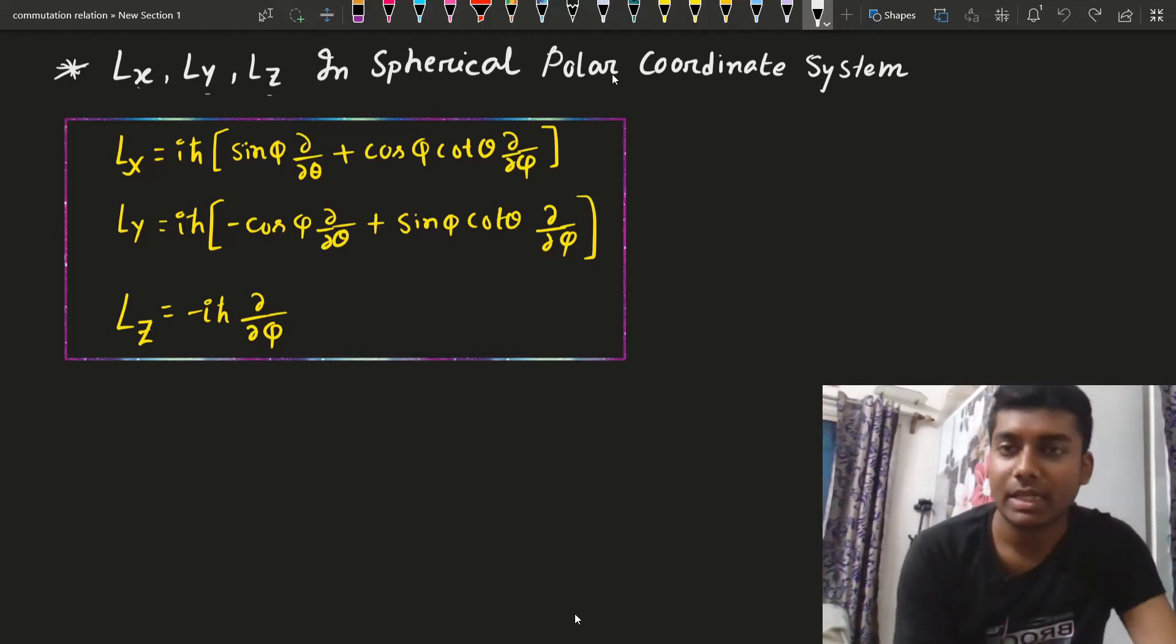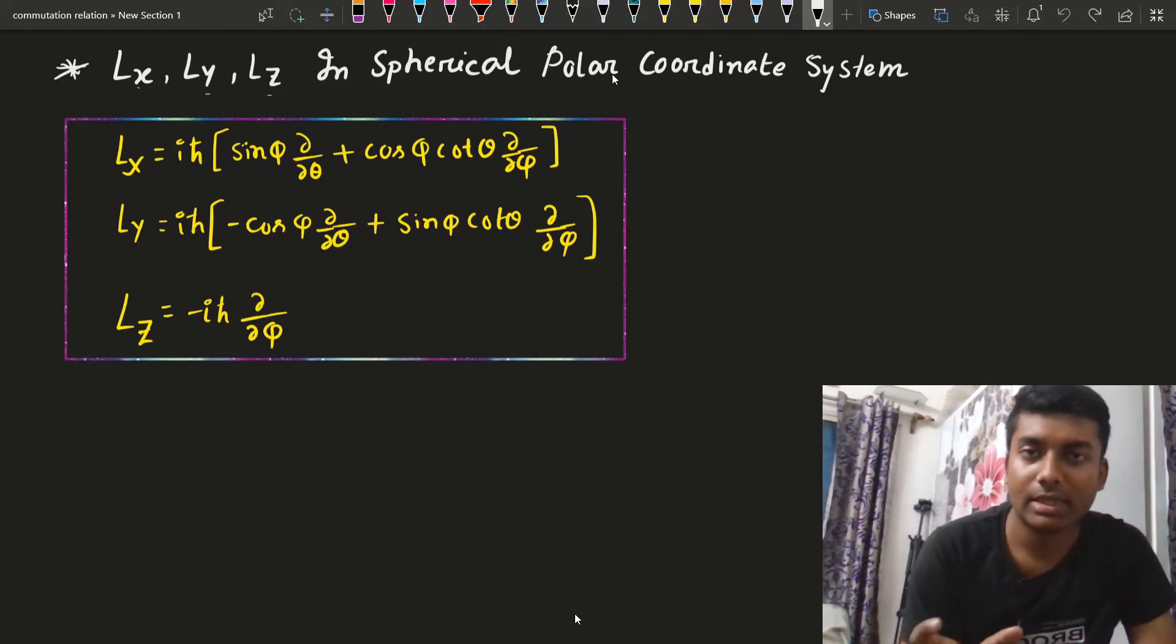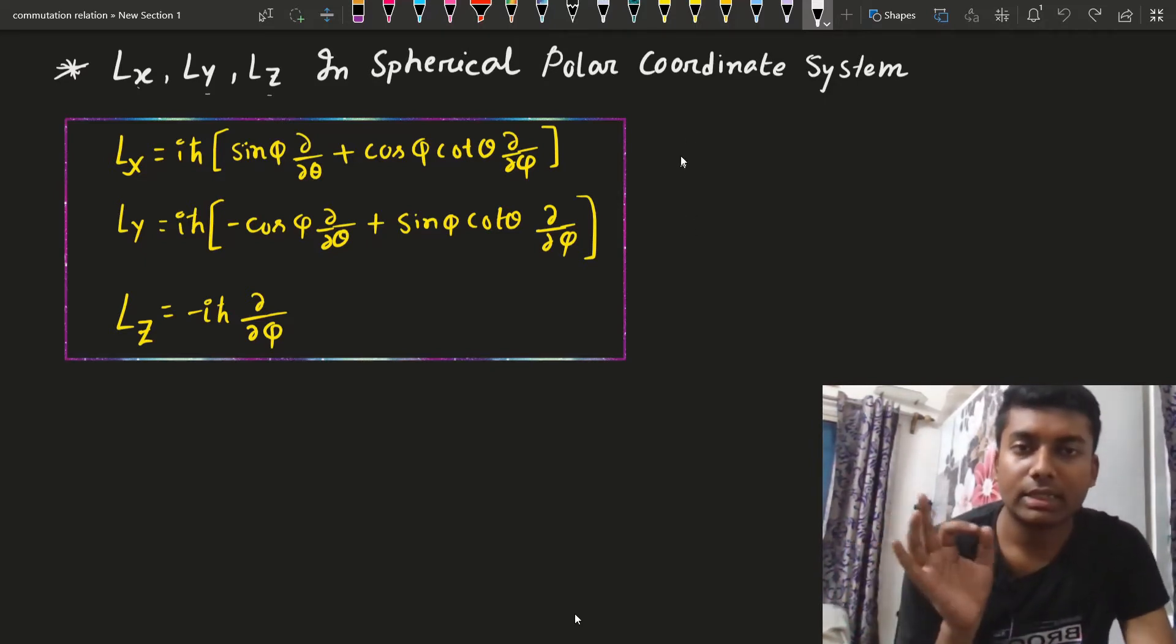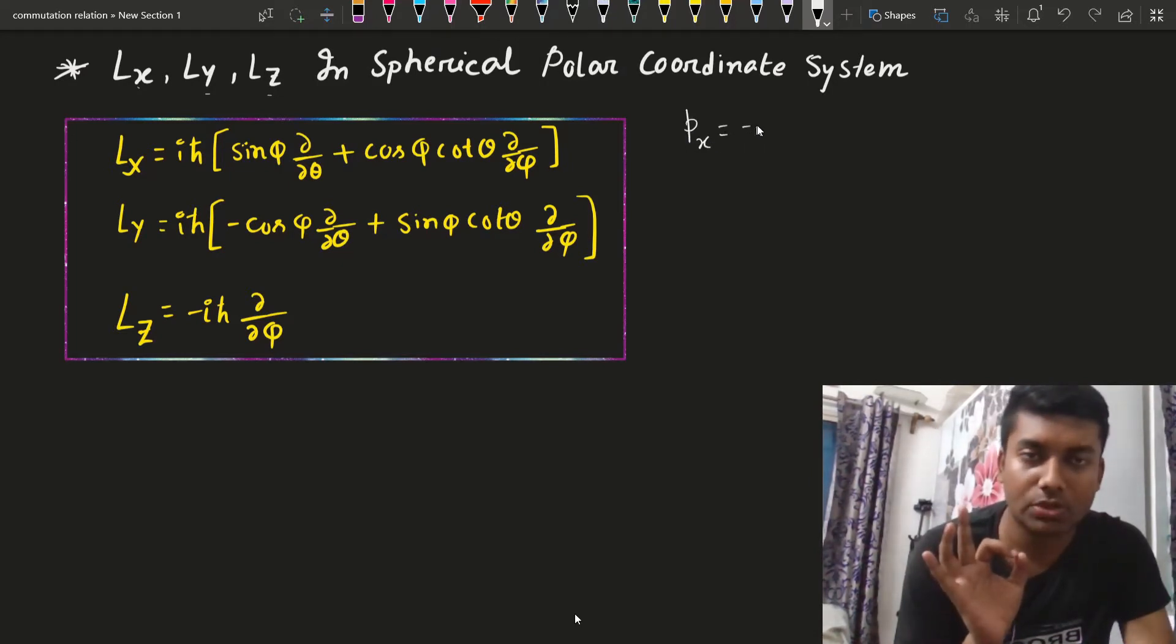Now these are what Lx, Ly and Lz are in quantum mechanics. These are the angular momentum or more specifically orbital angular momentum. Now what is the momentum Px? Px is equals to minus ih cut del over del x, right?